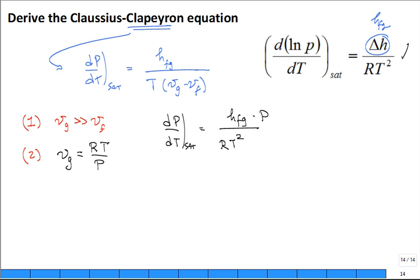We're almost there. You just bring the P over. So you have 1 over P, derivative of P with respect to T for saturation.